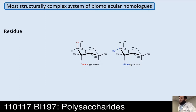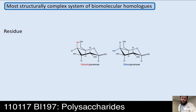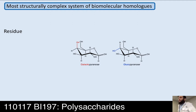Carbohydrates are pretty amazing things — at least that's what I think, because that's what I studied. I would say carbohydrates are the most structurally complex system of biomolecular homologues — meaning similar chemical structures within the same family — that we know of naturally occurring on Earth.